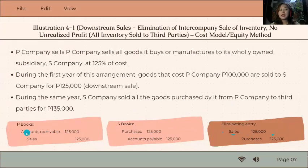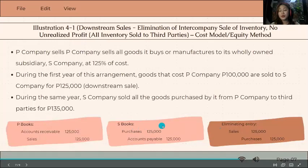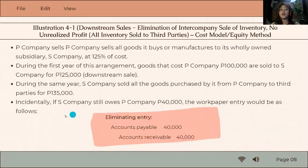But why aren't we eliminating the AR and AP? Because we have an assumption in this problem that it's fully paid. But in case it's not fully paid, let's say incidentally, if S company still owes P company 40,000.